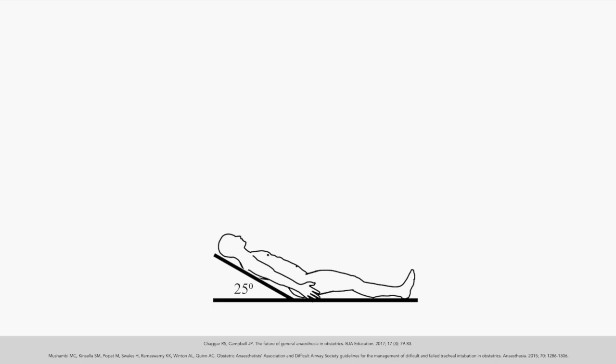First up is patient positioning. The specific intervention is ramping of the patient at a 20 to 30 degree head-up position. This can be achieved by aligning the external auditory meatus with the suprasternal notch. There are two main benefits to this position. The first is improved pre-oxygenation by increasing the functional residual capacity.